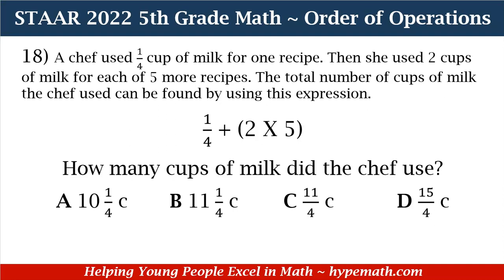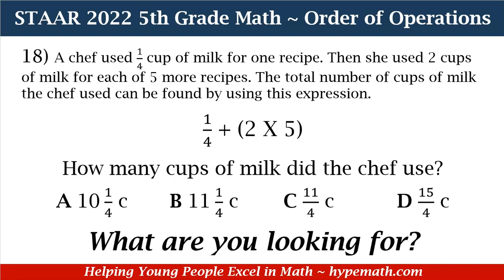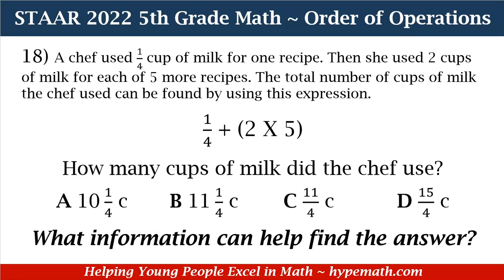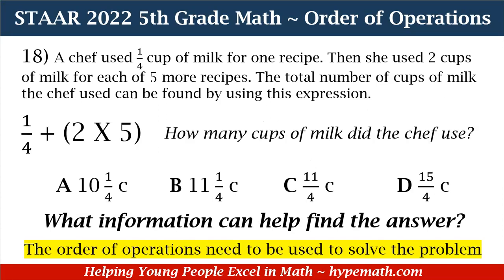In order to solve this question, the first thing we need to ask ourselves is: what are we looking for? We are looking for how many cups of milk the chef used. Now that we know what we're looking for, the next step is: what information can help find the answer? The order of operations needs to be used to solve the problem. We have 1/4 + (2 × 5), and with PEMDAS, it's parentheses first, then exponents, then multiplication and division, then addition and subtraction — both of those in order from left to right.